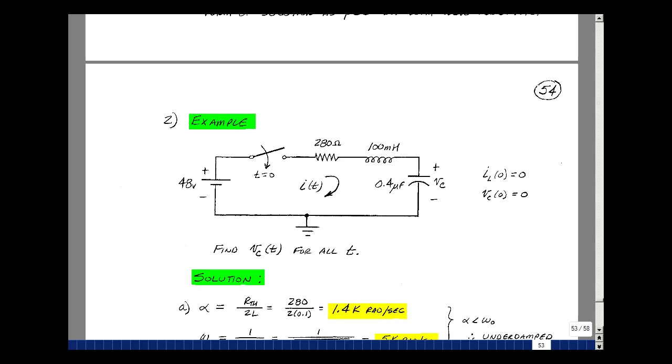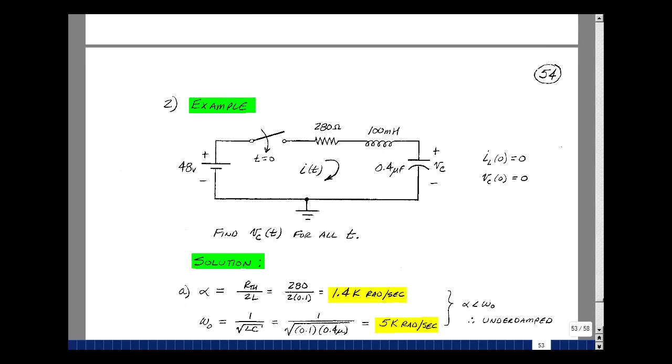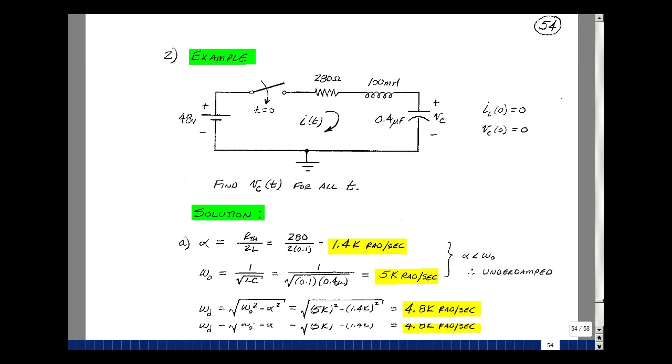Let's take a look at an example. The series RLC circuit has a single switch, 48-volt battery, resistor of 280 ohms, an inductance of 100 millihenries, and a capacitor of 0.4 microfarads. With the switch open, there's no current flowing in the circuit, so our initial condition for the inductance will be zero. And likewise, since we haven't connected anything, the voltage across here would just be that of a fresh capacitor, which would be zero. Assume the switch closes at t equals zero, and let's calculate the solution of the voltage across the capacitance.